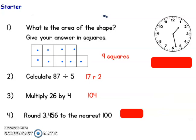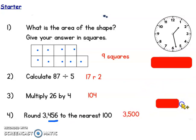Round 3,456 to the nearest hundred. So we're just looking at the hundreds — 456. We want to think: is that closer to 400 or 500? And the answer is 500. So the final answer was 3,500. The 1,000 stays the same.